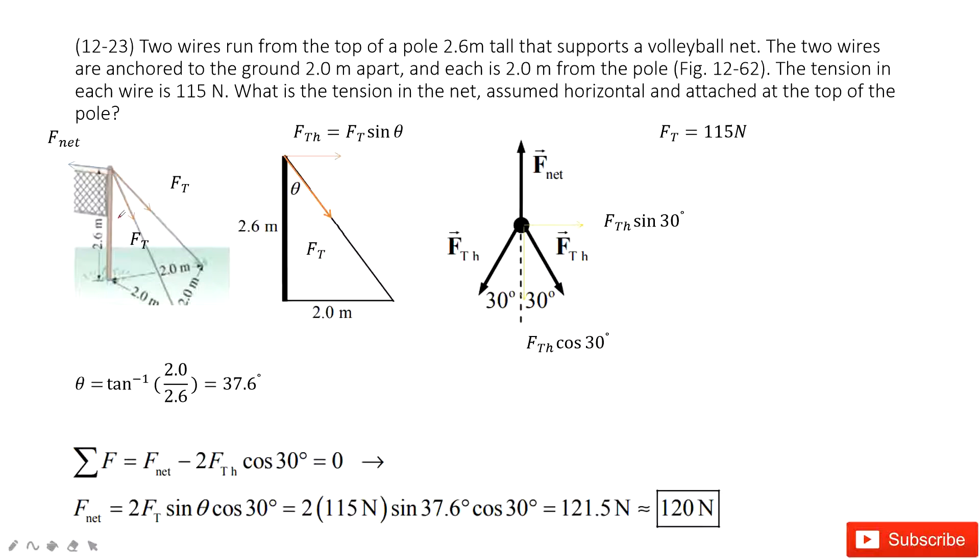Now in this system, you can see we have the volleyball net. It can be balanced with the help of these two strings. For each string, we have the force Ft. And then the net force acting on this volleyball net is Fnet. We need to find what is the tension in the net, assumed horizontally and attached at the top of the pole.